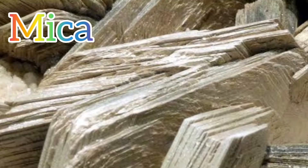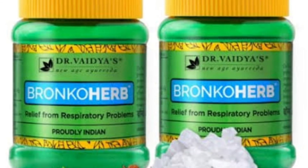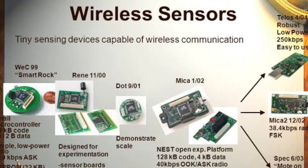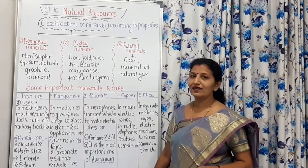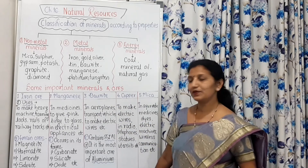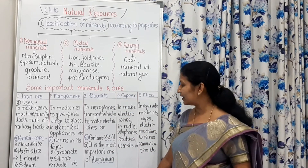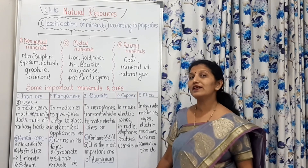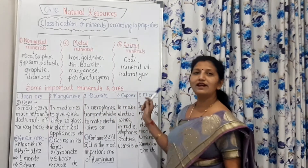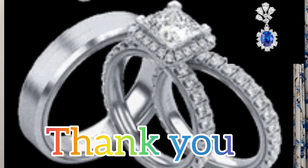Mica is a non-metal mineral. It is used in Ayurvedic medicines, dyes, electric machines, and wireless communication. We have now studied some important minerals and their ores — iron ore, magnesium, bauxite, copper, and mica — along with their uses. Thank you.